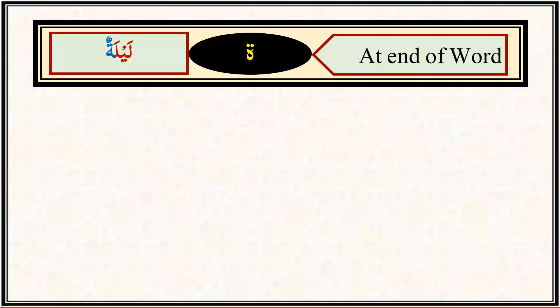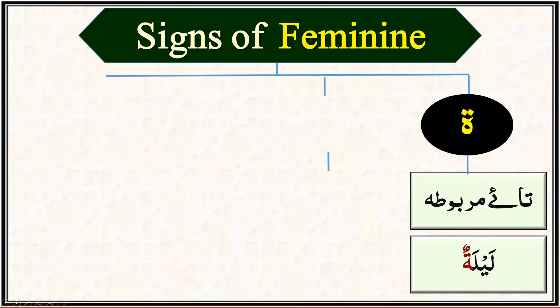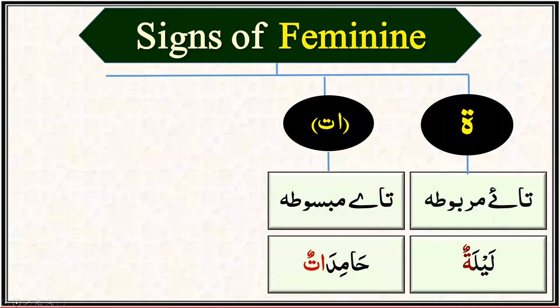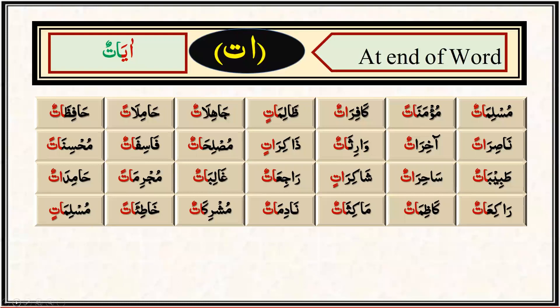Examples of ta marbuta words are: ghorfatun, shajaratun, salatun, tilmizatun, sahlatun, kariyatun — all feminine because they have a round ta at the end. The second sign which enables us to identify the feminine is alif and elongated ta, also known as ta mabsuta. Example: hamidatun. Further examples include: muslimatun, minatun, warifatun, kafiratun, zalimatin.